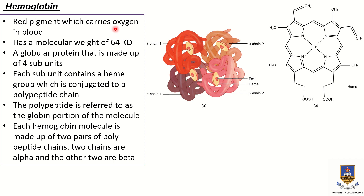Hemoglobin is the red pigment which carries oxygen in blood. It has a molecular weight of 64 kilodaltons and is a globular protein made up of four subunits — two alpha chains and two beta chains. Each subunit has a heme group conjugated to a polypeptide chain; the polypeptide is referred to as the globin portion of the molecule. This is the chemical formula of hemoglobin.